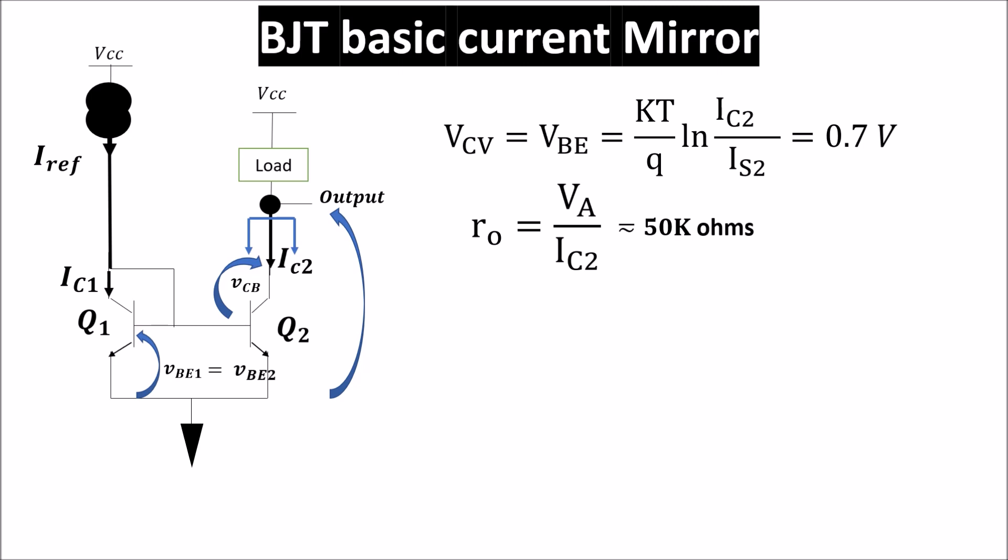This means also that we have to take into account the early effect and so the output current IC2 is this. So if VCEQ2 or the output voltage is more than 0.7V the base-collector voltage of Q2 is more than zero, so more than the base-collector of Q1 which has to be zero because it's wired. And this introduces another difference between Iref and the mirrored current which will rise a little because of this effect.